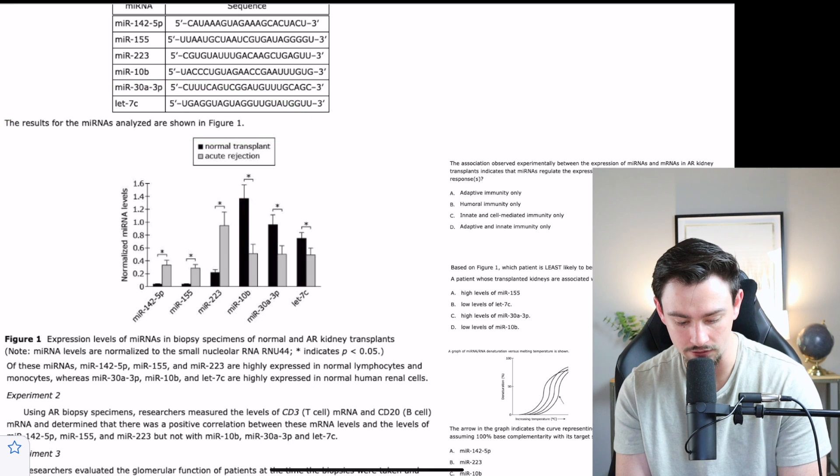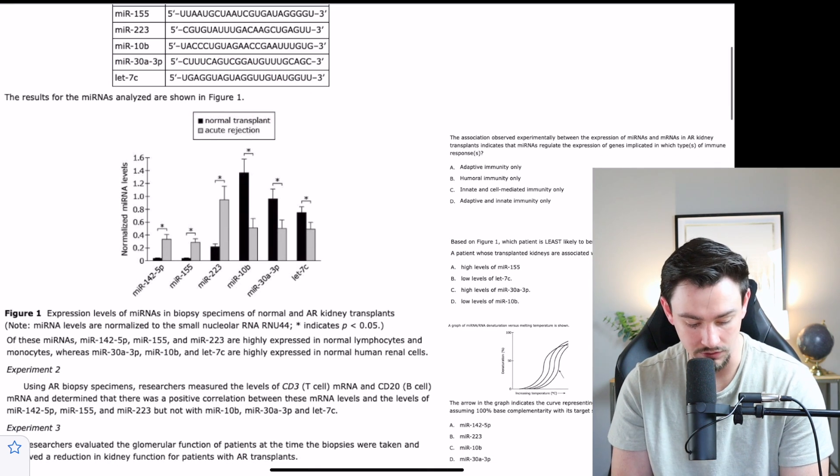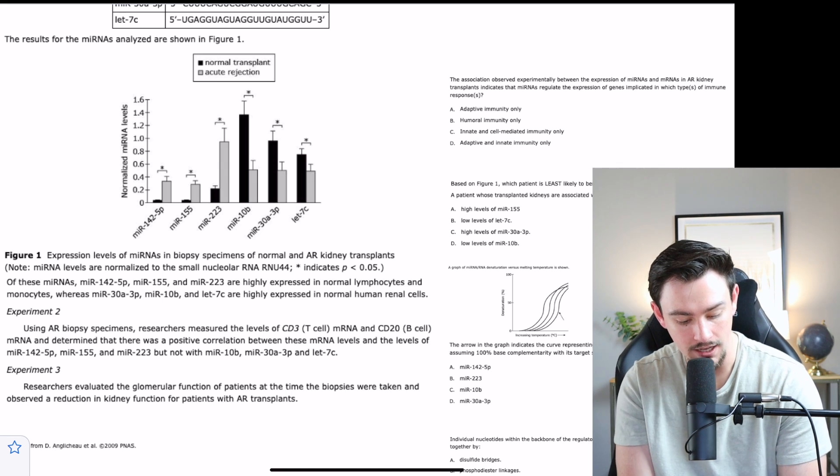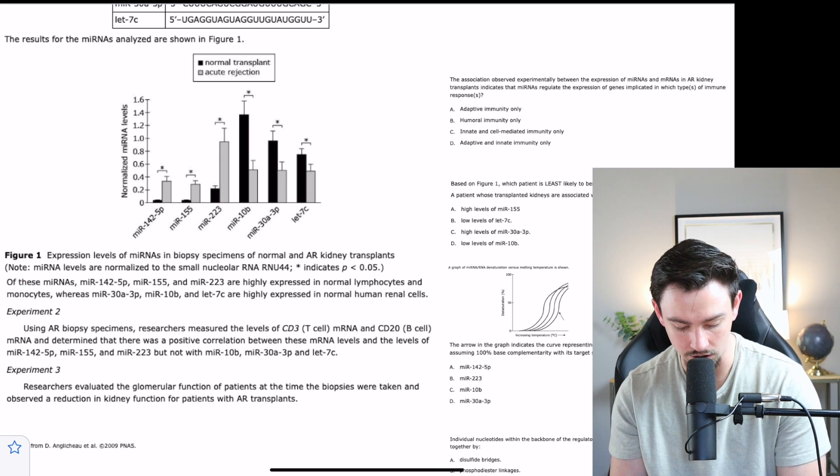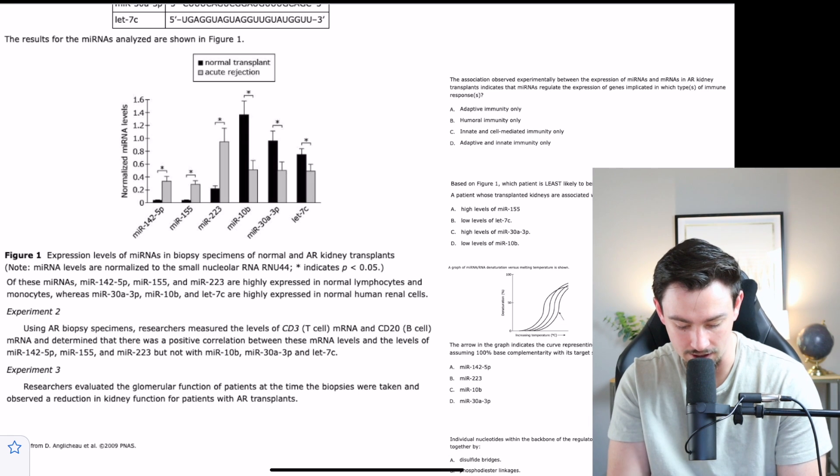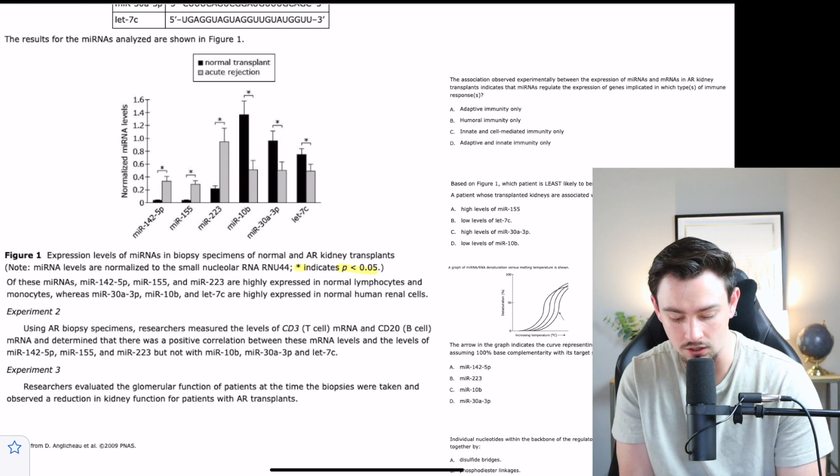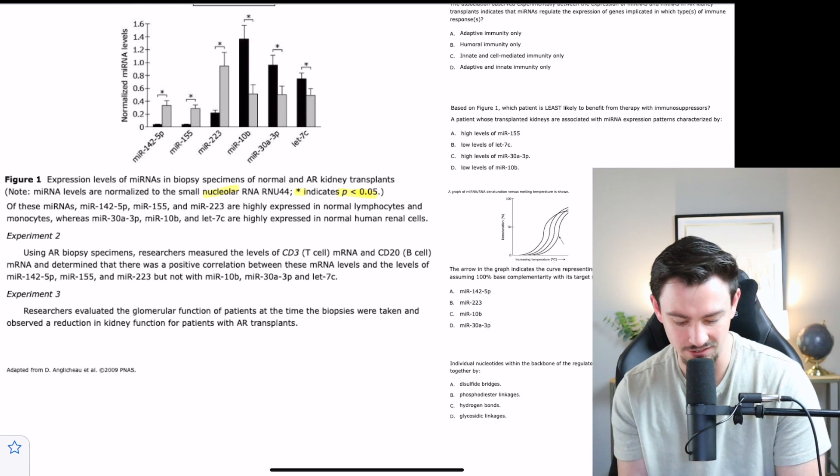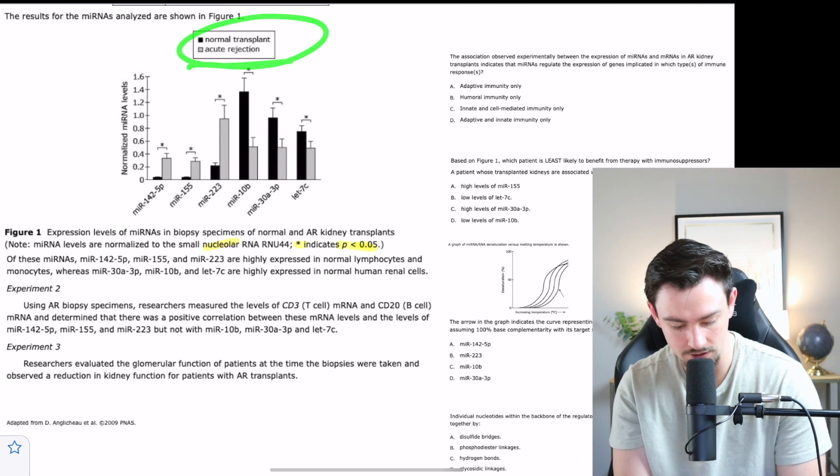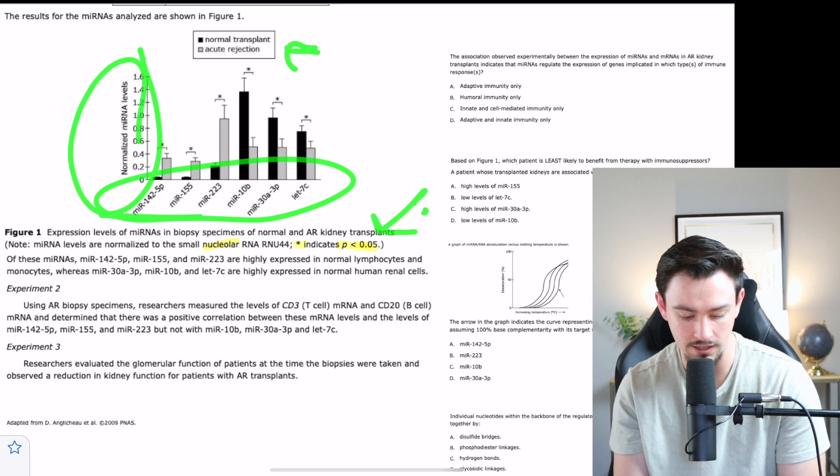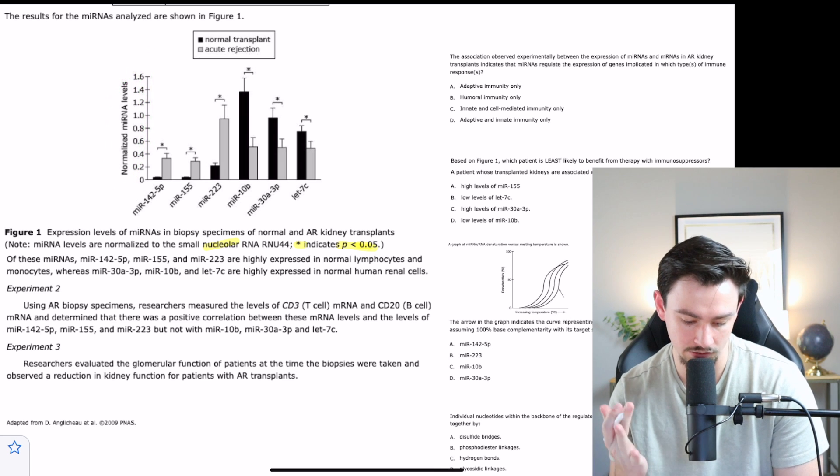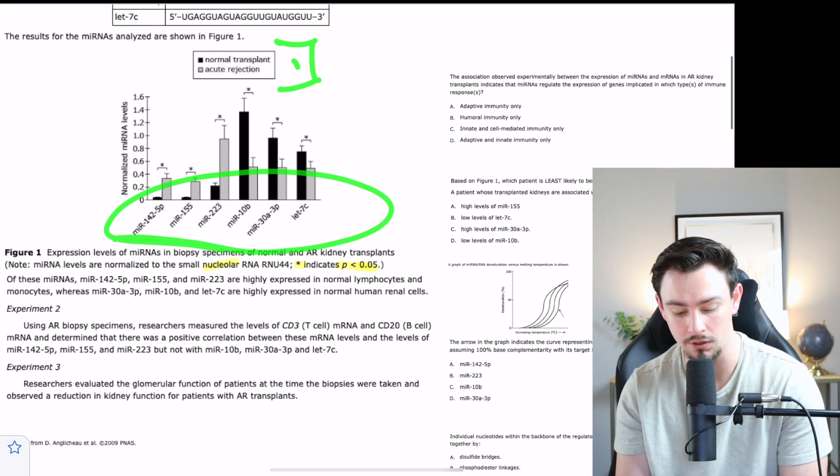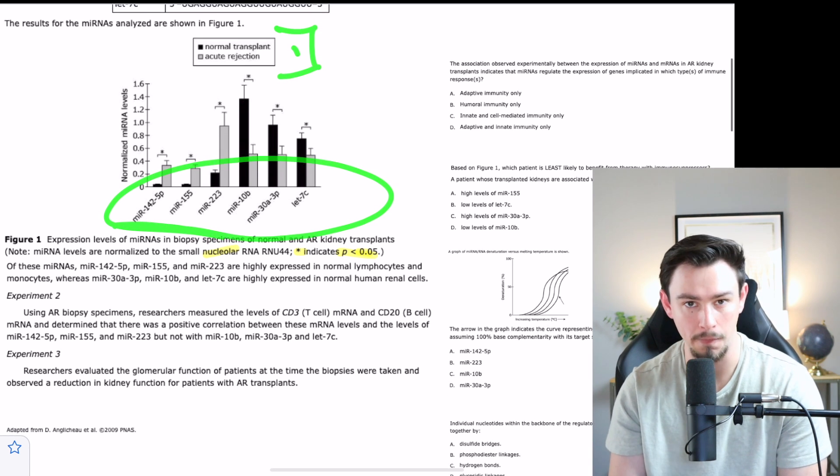The results for the microRNAs analyzed are shown in figure one. We read the caption: expression levels of microRNAs in biopsy specimens of normal and acute kidney transplants. It tells us that this indicates our p-value. If you've read our high yield guide, you know that we do consider statistics to be a high yield portion of the MCAT. We read the legend and then we read the axes. On our axes, we've got normalized microRNA levels juxtaposed to which specific microRNA is getting expressed in normal transplant or acute rejection.